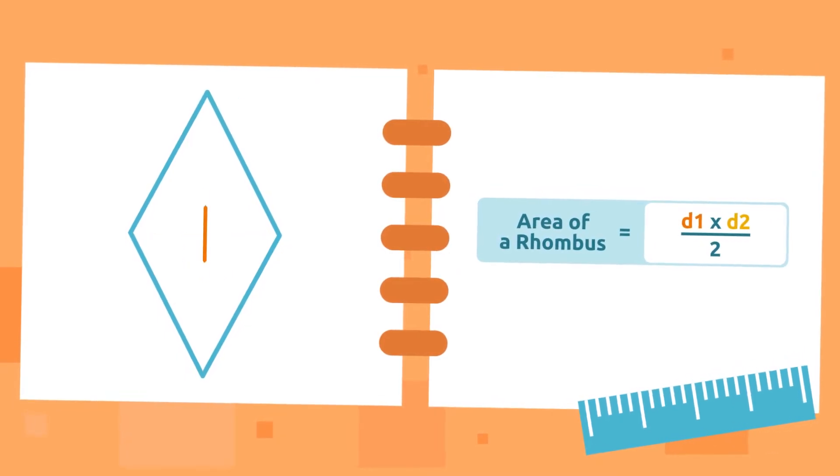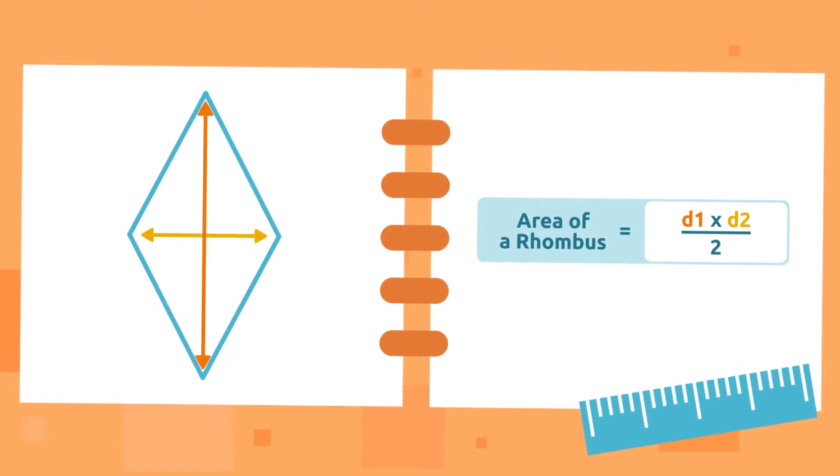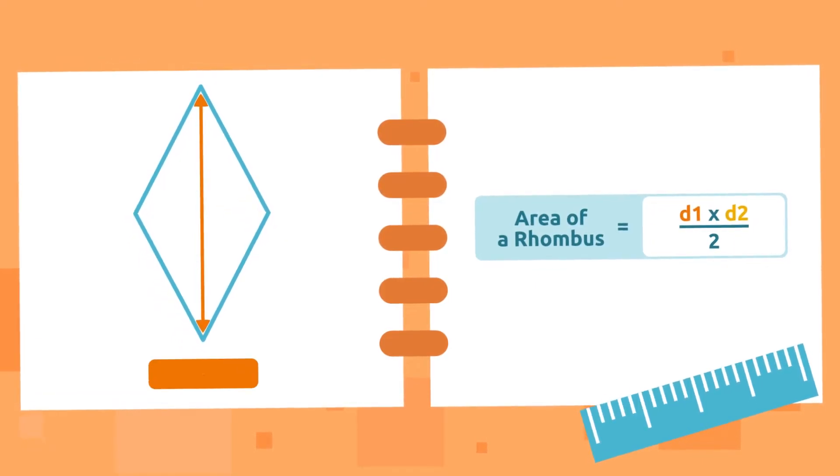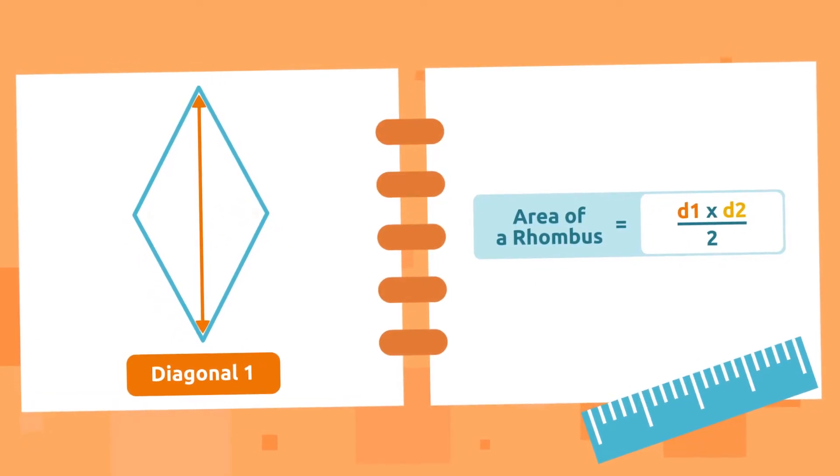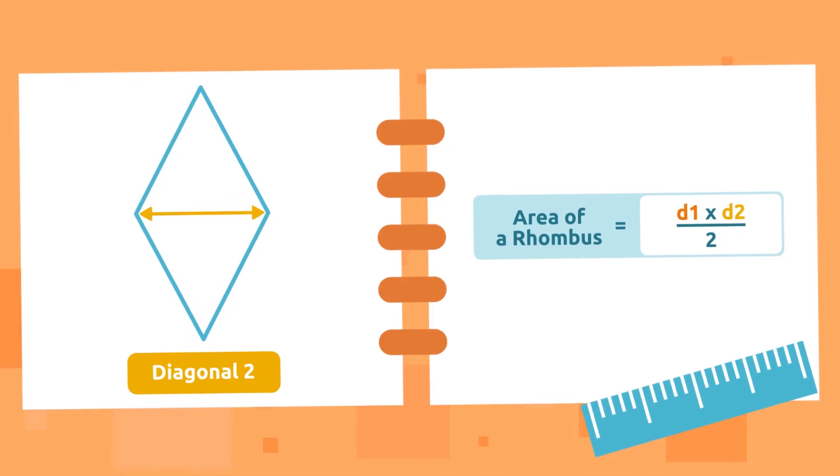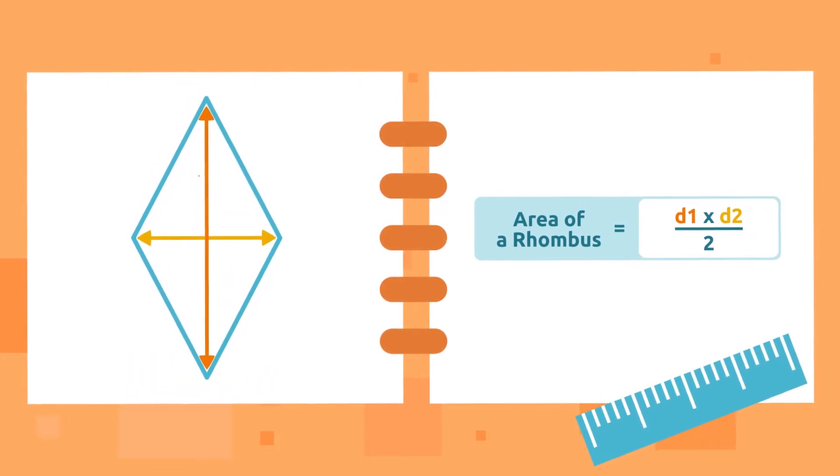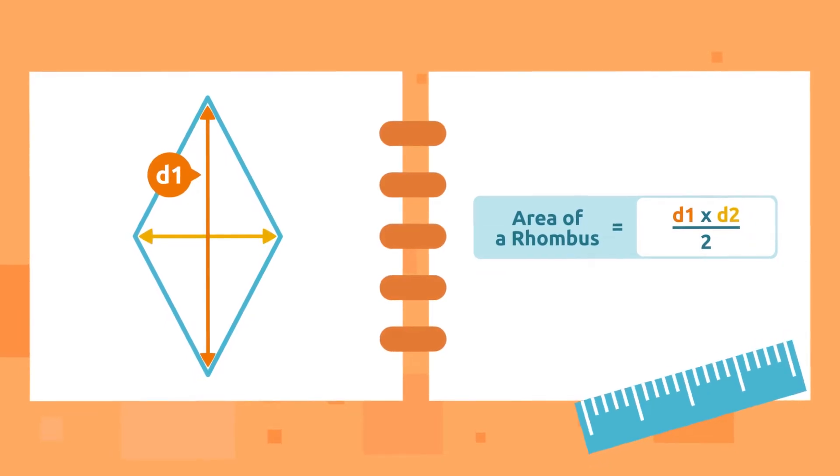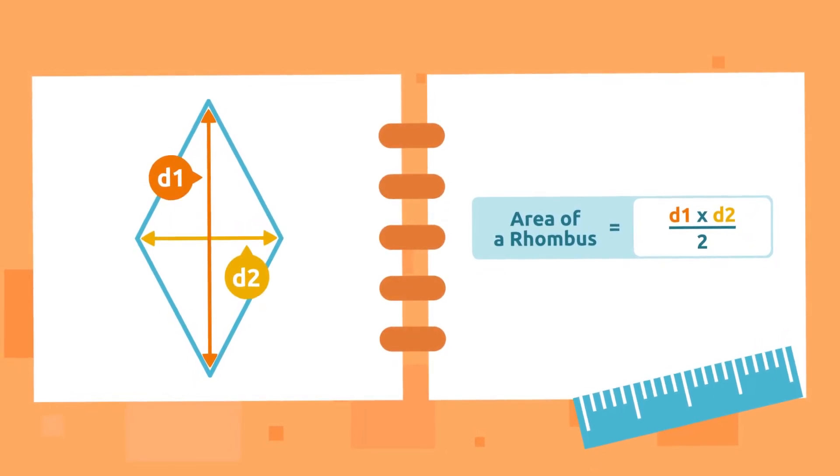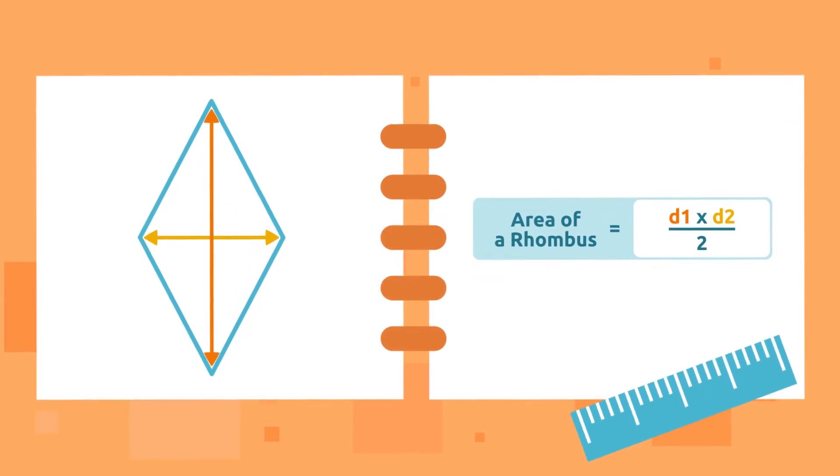There is one diagonal longer than the other. That is why we call the longest diagonal one and the shortest diagonal two. The longest diagonal is represented by d1 and the shortest diagonal by d2. Let's practice.